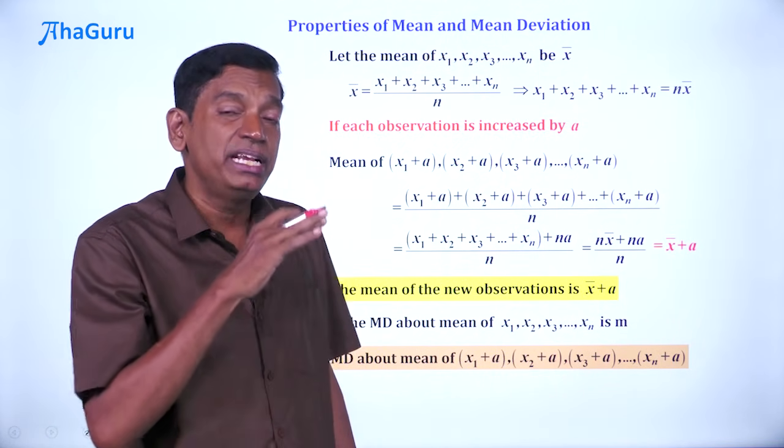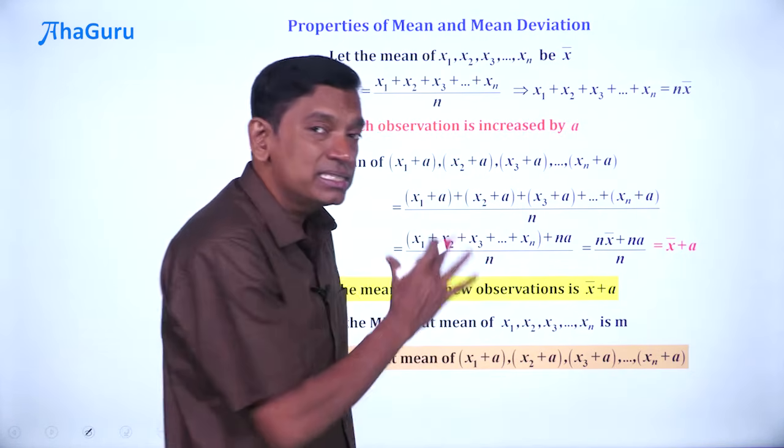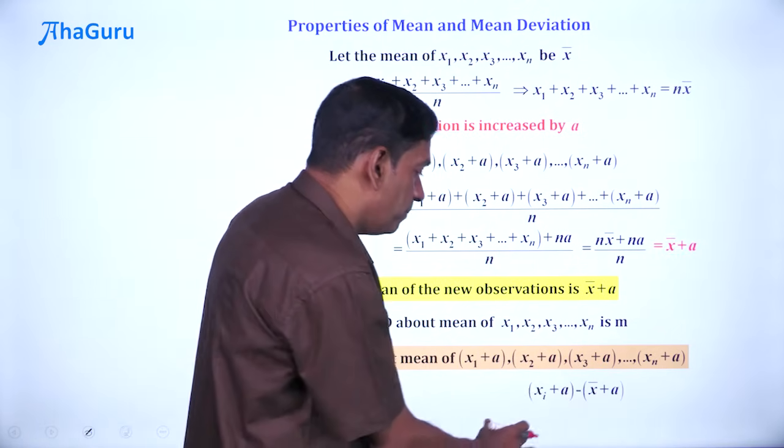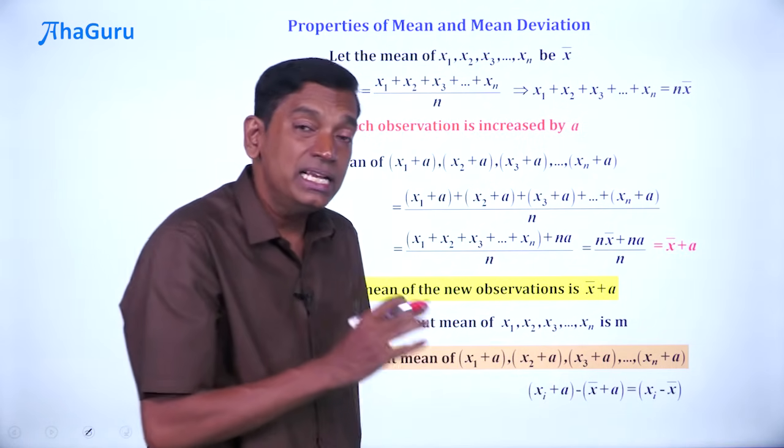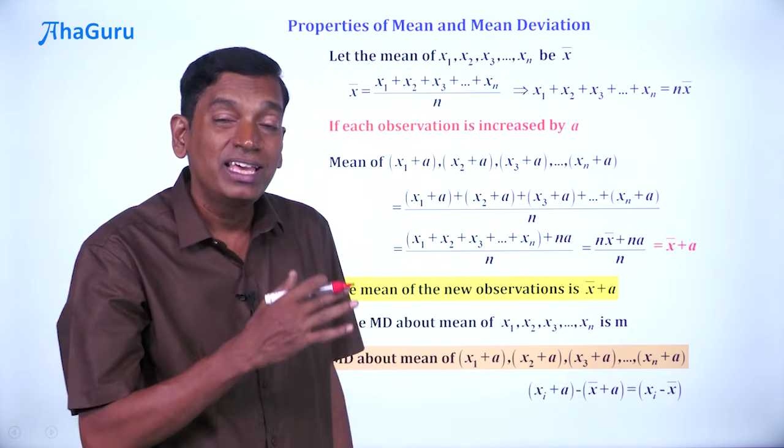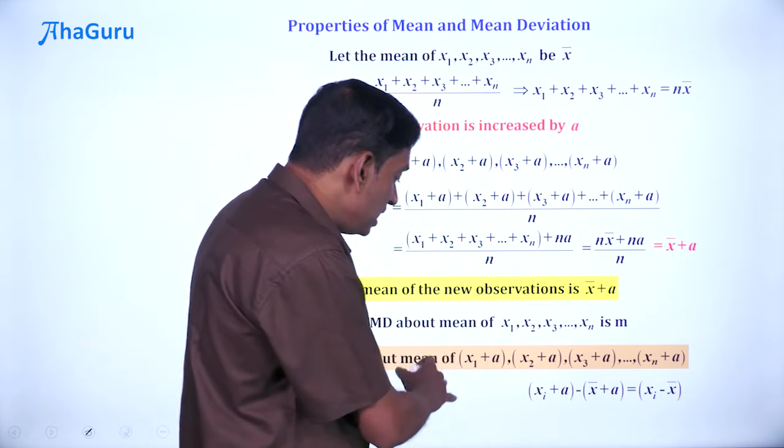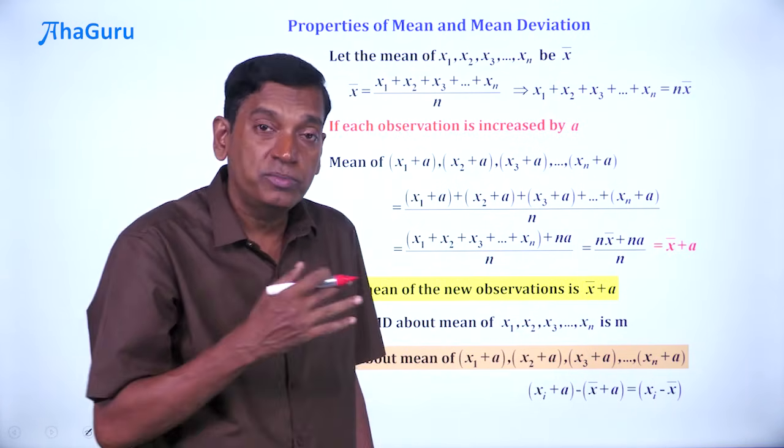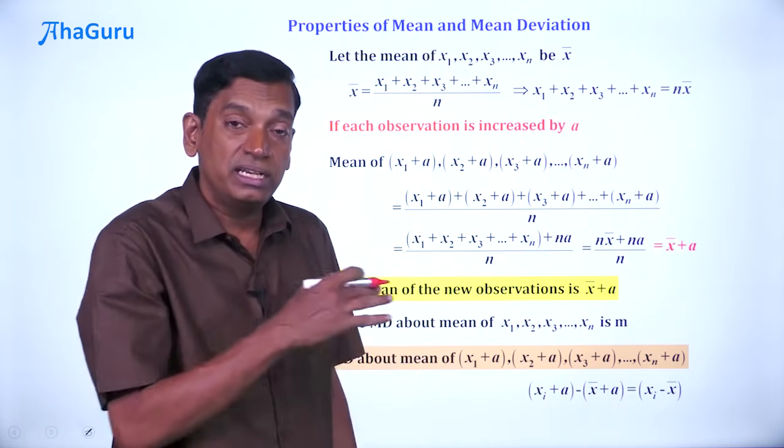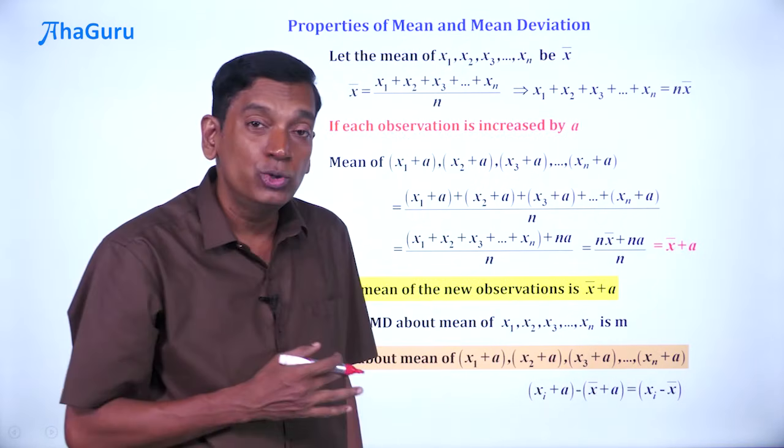In order to calculate mean deviation, we do |xᵢ - x̄|. Now, xᵢ - x̄ will become (xᵢ + a) - (x̄ + a), and the a's will cancel, leaving simply xᵢ - x̄. That means the mean deviation for the new set of observations—if you add all of these |xᵢ - x̄| and divide by n—you will get the same original value m.